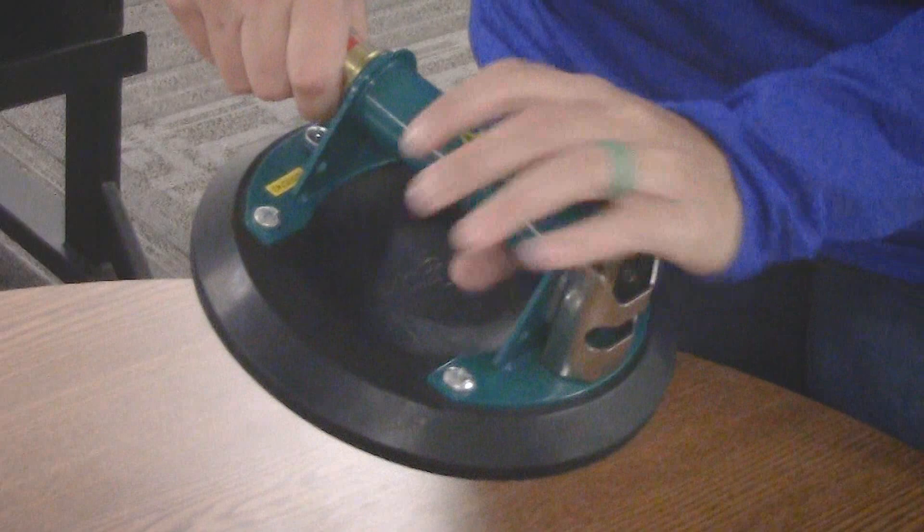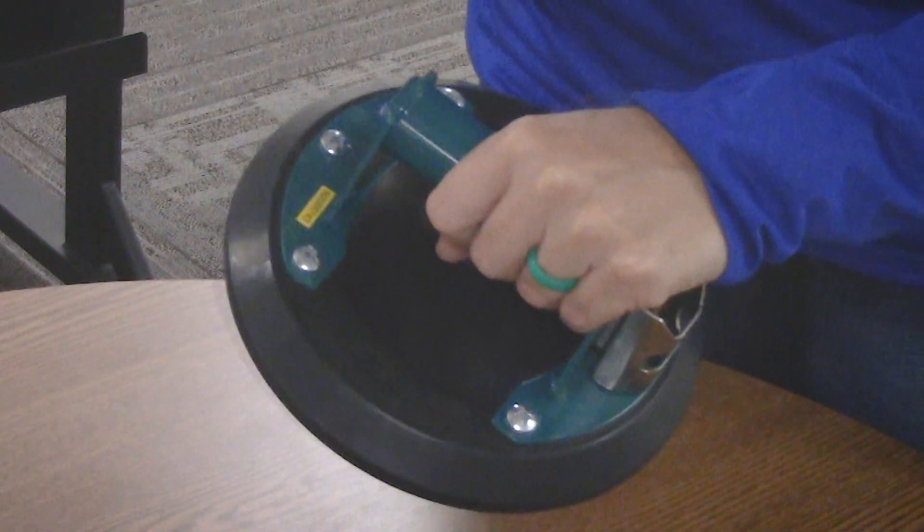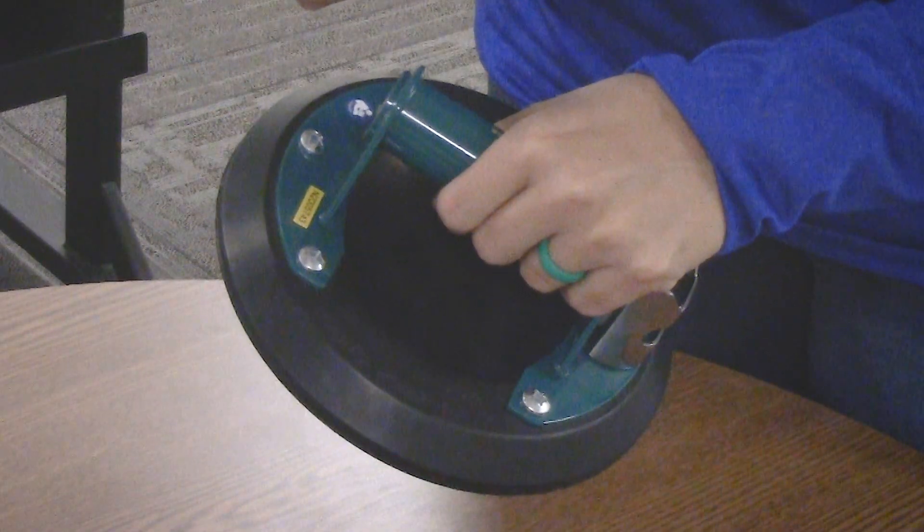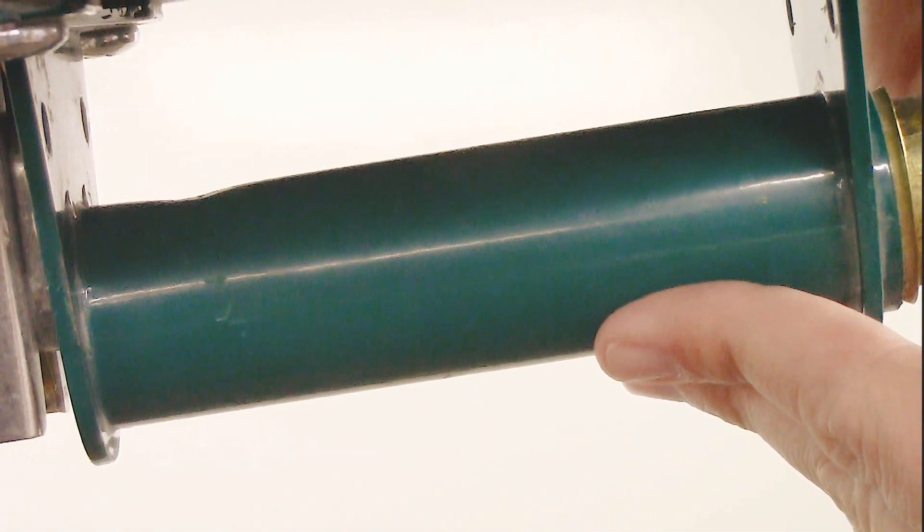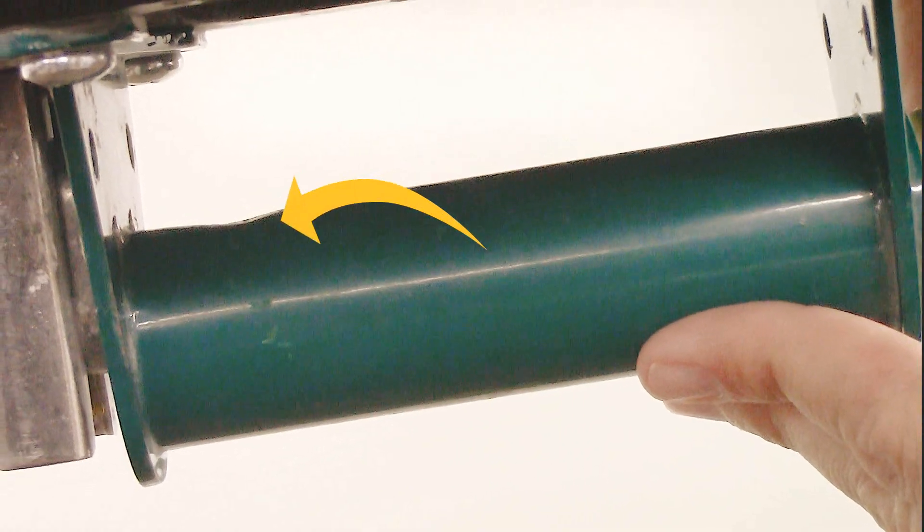To remove the plunger from the handle, hold onto the assembly and pull it out of the handle. If it's hard to remove, check the outside of the handle to see if there are any dents that might be preventing the plunger from moving freely. If any are found, then the handle should be replaced.